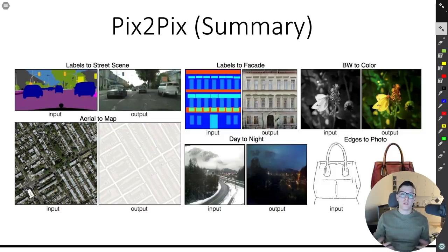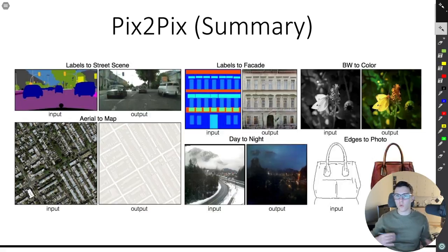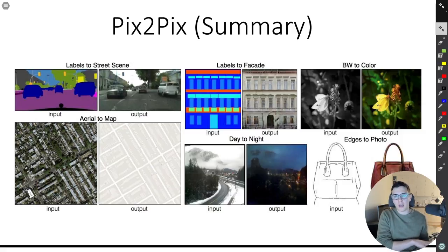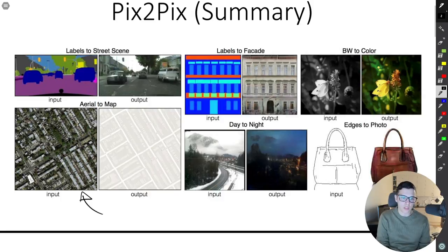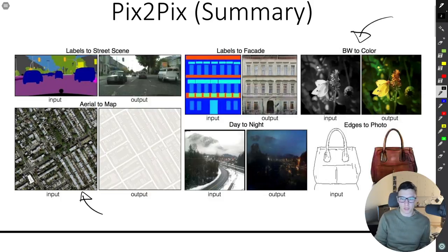Welcome back. In this video we'll implement the pix2pix paper in PyTorch from scratch. I'll do a quick summary of the paper for those who haven't watched my paper walkthrough — I highly recommend that if you want more details. The key idea is that pix2pix can take a satellite image and transfer it to a Google Maps image, and it can also do things like image colorization.